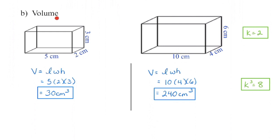We know that volume is the capacity or the amount of cubic units that we can fit inside an object. The easiest way to calculate volume for a prism is to figure out how many units can fit along the base — find the area of the base and then multiply by how many units we have on the height. We can get 10 square centimeters on the base; three layers of that gives us 30 cubic centimeters. We know that if we take a look at our new figure, each of those linear dimensions has been extended by a factor of 2, so we're doubling all of those dimensions to get our new dimensions.